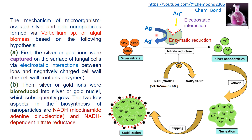Then the silver or gold ions are bioreduced into silver or gold nuclei, which subsequently grow. When the ion reaches the cell, it undergoes enzymatic reduction to silver zero form, producing silver nanoparticles. These further grow through nucleation and, with capping agents, produce stabilized silver nanoparticles.